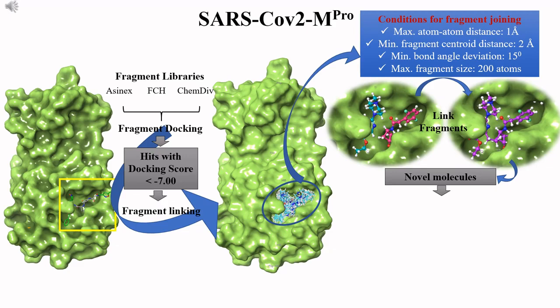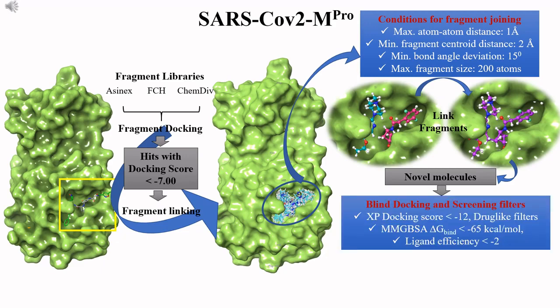The screened high affinity fragments of adjacent sub-pockets of the binding site need to be linked to generate new molecules. These newly generated molecules should be subjected to blind docking to prioritize molecules with good binding affinities quantified in terms of docking score, MMGBSA binding energy, and ligand efficiency.